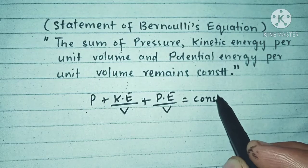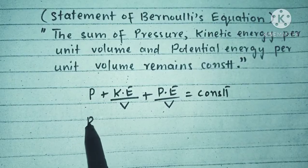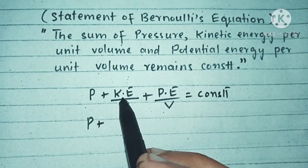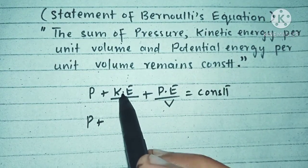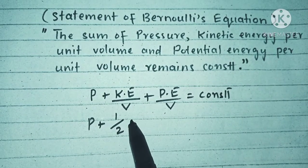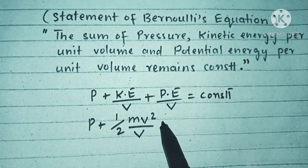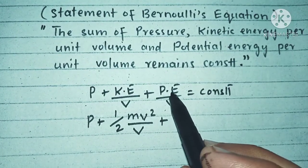We can write here as pressure P plus, as we know that kinetic energy is equal to half of mv squared, so we write here 1 divided by 2 mv squared divided by V plus potential energy is equal to mgh.